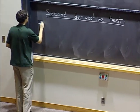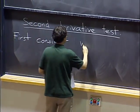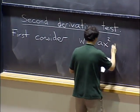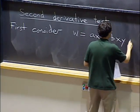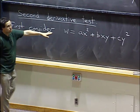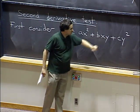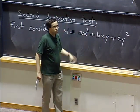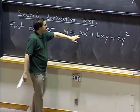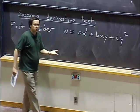Let's start with an easy example that will provide the basis for the general method. We are going to consider a function that's actually just quadratic. Say I have a function w(x, y) of the form ax² + bxy + cy². This function has a critical point at the origin, because if you take the partial derivative with respect to x and plug in x = y = 0, you get zero, and same with respect to y.